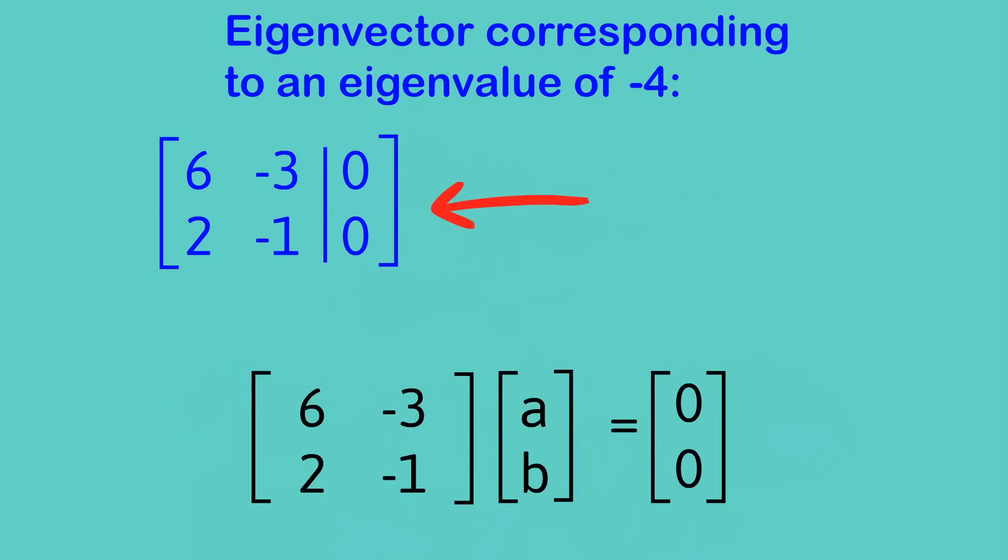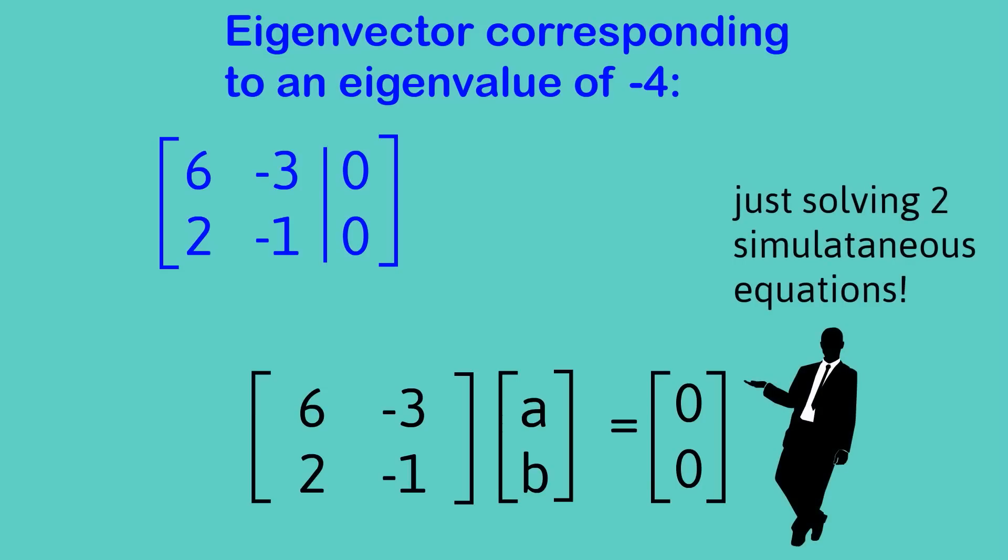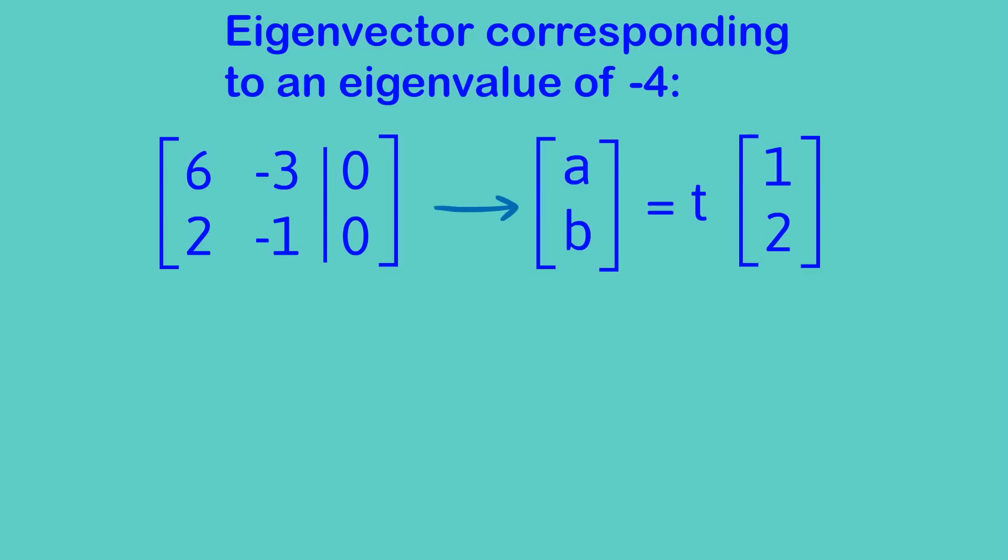I've just drawn the line down there to augment the matrix with the [0,0] because this is now just solving two simultaneous equations in matrix form and we just use Gaussian elimination. You'll notice that the second row [2,-1] is just a multiple of the first row and you would expect that because we need multiple solutions.